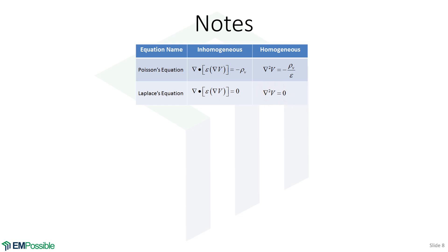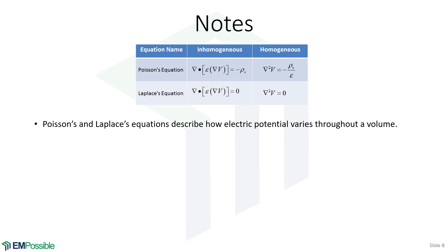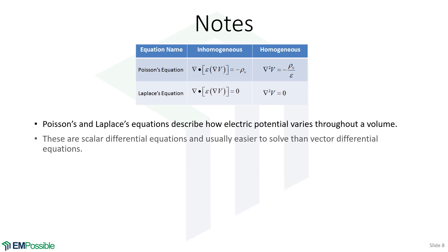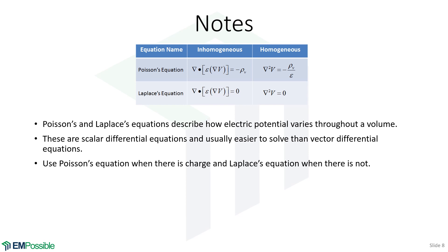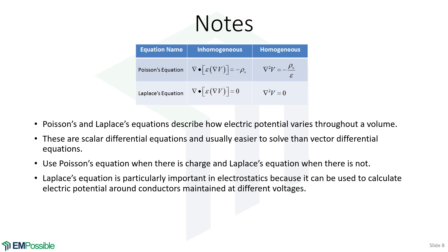We will use Laplace's equation to calculate how the electric potential varies throughout a device like a resistor or a capacitor, assuming some applied voltage or charge. Differential equations with this scalar quantity, the electric potential, are much easier than the vector equations. Remember that the electric potential and the electric field intensity are the same physical thing expressed two different mathematical ways. We use Poisson's equation when there's charge involved and Laplace's equation when there's not, but almost everything we're doing here is Laplace's equation — and in fact Laplace's equation for homogeneous media. It's huge in electrostatics, really just because it's easier to solve than vector equations.